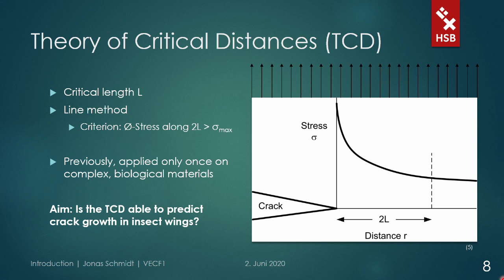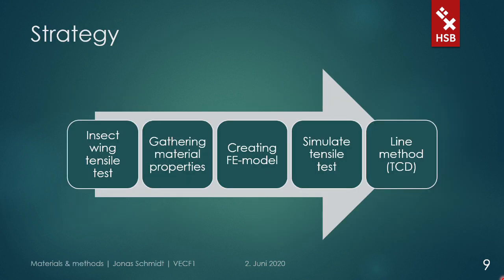For that purpose, we used the following strategy. First, insect wings were tested in tensile tests to gather material properties as well as the crack pathway and the dimensions of the respective sample. Based on these tests, finite element models were created, which were then analyzed in static observations of successive steps that matched the actual tensile test. The stresses in the single steps were evaluated with the line method, so that the prediction results could be compared to the actual crack propagation in the tensile test.